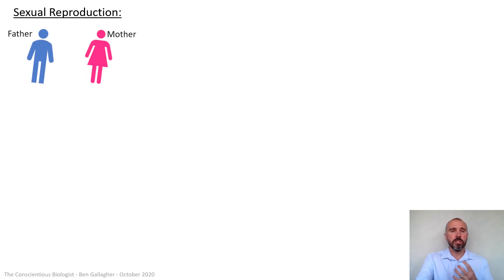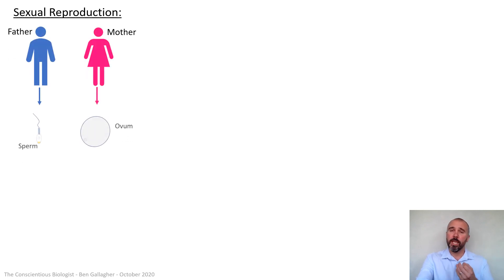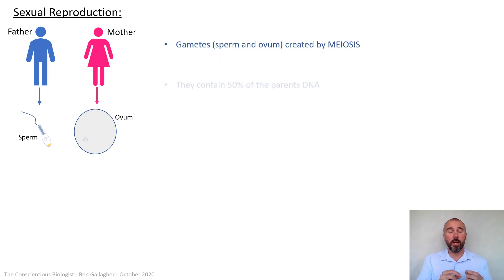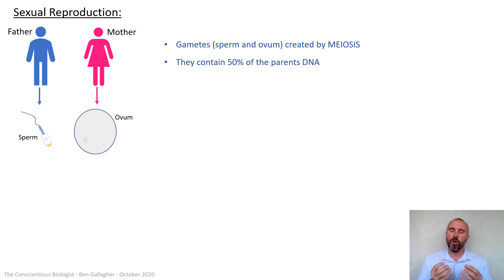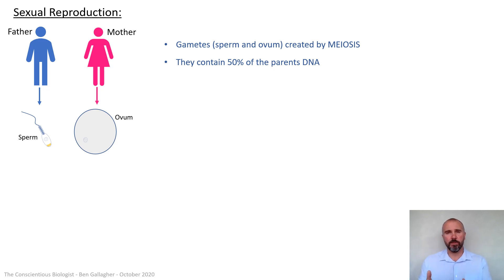Before we start talking about control and fertility let's remind ourselves of how a woman gets pregnant and let's look at conception in humans. You need a father and a mother. Each of those produce gametes which are produced by meiosis — the type of cell division that produces cells that have 50% of the parental DNA. That's called haploid, and in males those are sperm cells and in females it's an ovum or ova.